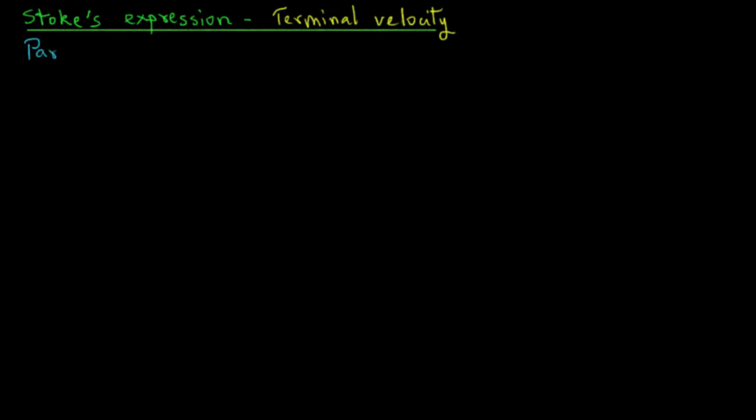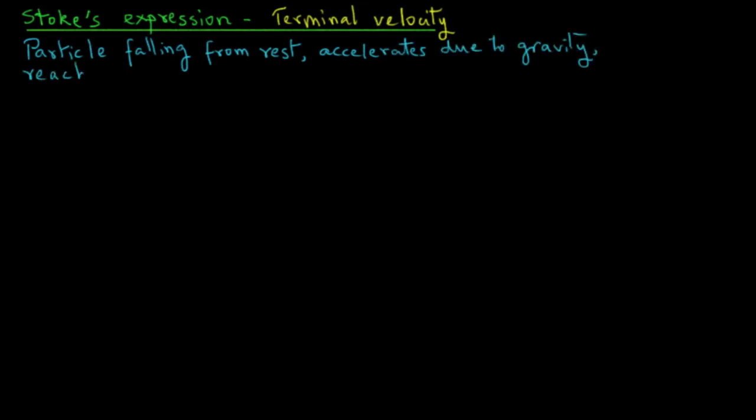If we have a particle that is falling from rest, it will accelerate due to gravity, and then it will reach a constant velocity, and that constant velocity will be called terminal velocity.